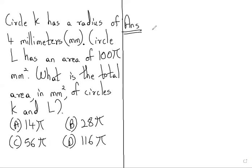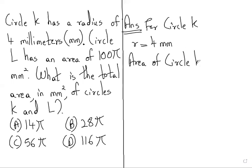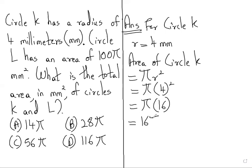First for circle K, here they have given that the radius is 4 mm. Area of circle K—we will write the formula. Area of circle is πr². So π we will write as is and instead of r we will write 4². So π × 4², which means 4 multiplied by 4, so it will be 16. So π into 16 will be 16π.